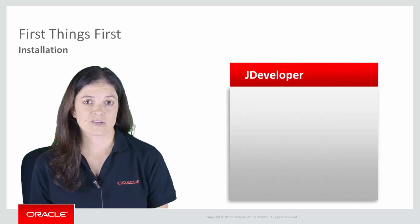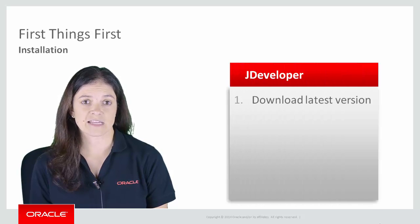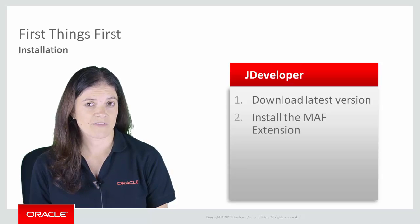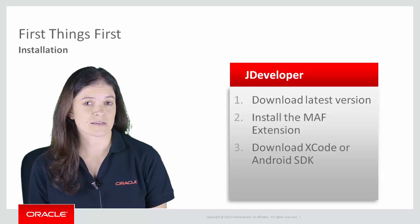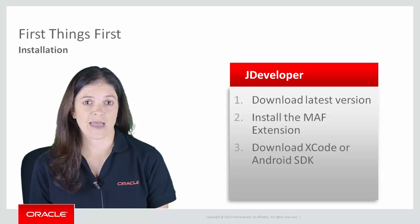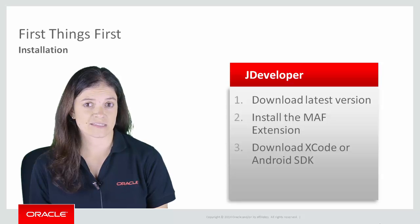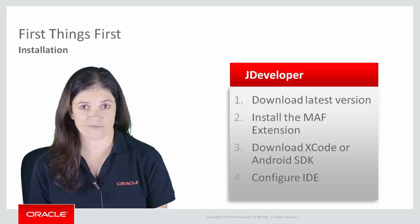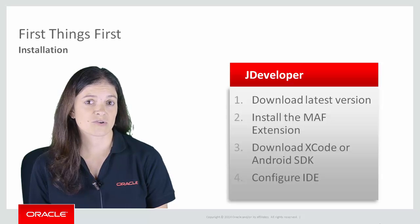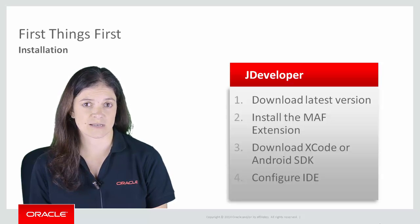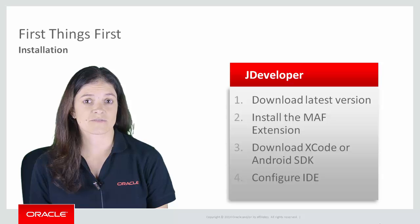If you're going to use JDeveloper, you download the latest version — currently 12.1.3 — from OTN. Once you have that, you install the MAF extension from within JDeveloper. I'll show you where this is in a minute. Then you download Apple Xcode or the Android SDK for Android or iOS devices, and configure JDeveloper so it knows where these resources live on your machine. Don't worry, I'll show you where you can find a detailed tutorial for all of this.